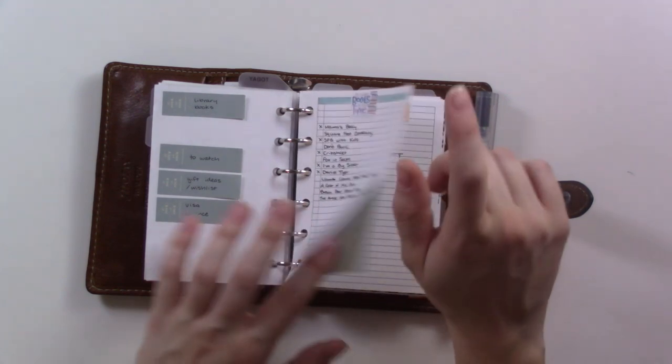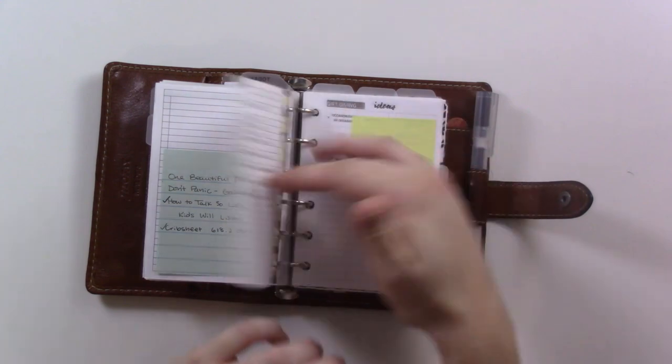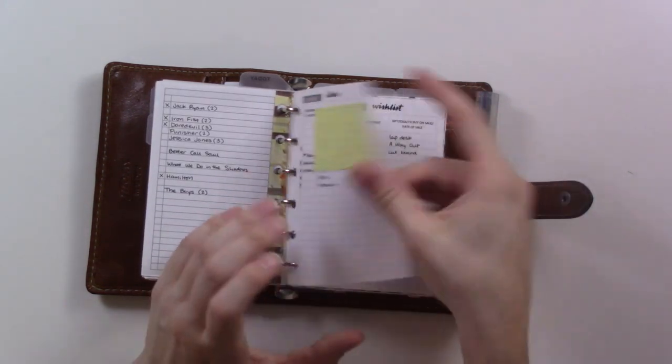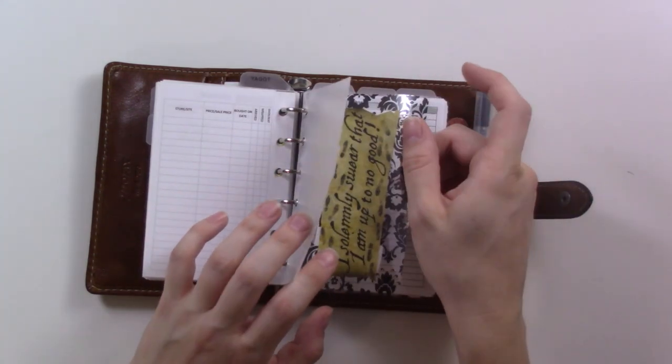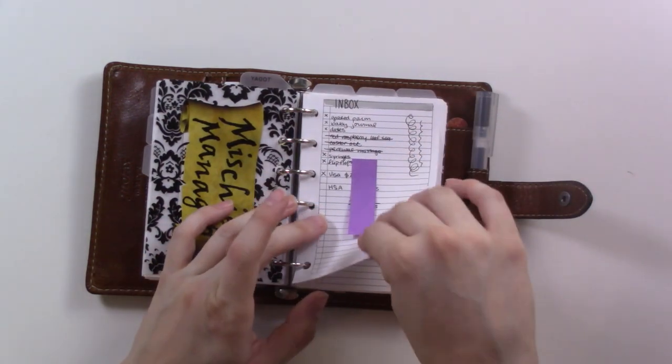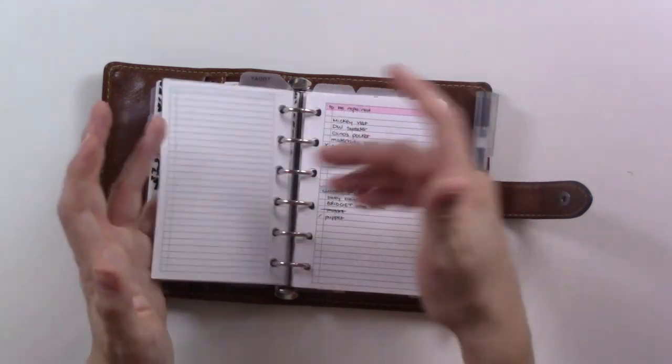Books that are checked out from the library, I'll have no due date currently but I don't want to forget about them. To read, to watch, to watch with my husband, gift ideas, wish list for myself. The next section is like project general projects sort of. There's my inbox in the front of it, just sort of if I need somewhere to write something and it's not immediately evident where.